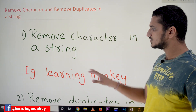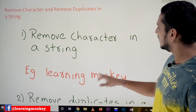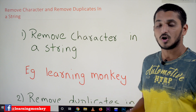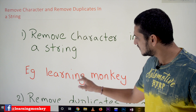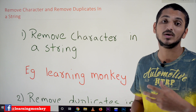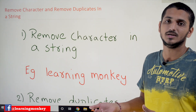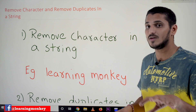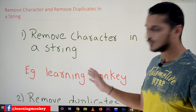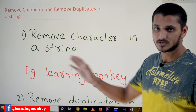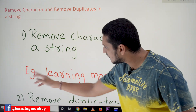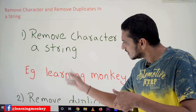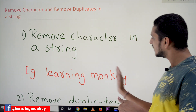In other languages, consider the example string 'learning monkey'. We have to remove the character 'n'. How many times is 'n' there? One, two, three — three times. We have to remove all occurrences of 'n'. In other languages, we have to take this string and examine it character by character — first character, second character, and so on.